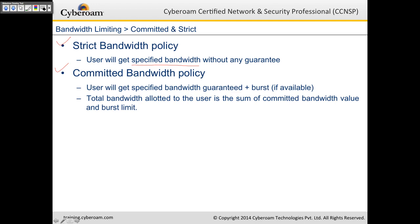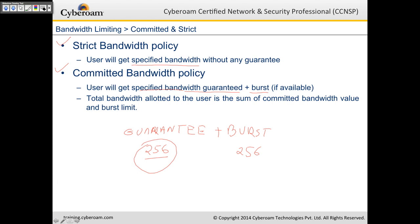In committed bandwidth policy, the user will always get the specified bandwidth, which is guaranteed, plus you can also define a burstable bandwidth if available. There are two parameters: guarantee and burstable. For example, if you specify 256 kbps as guaranteed and another 256 kbps as burstable, in any case the user will always get 256 kbps, but if they require more bandwidth they can draw from the burstable pipe if that 256 kbps is available at that point. So the total bandwidth allotted is the sum of committed and burstable, making it 512 kbps.